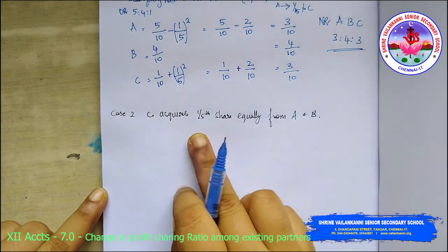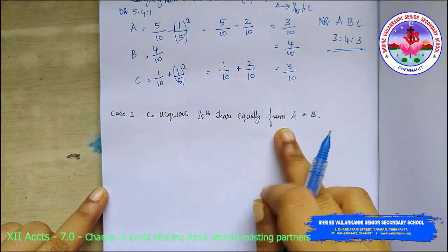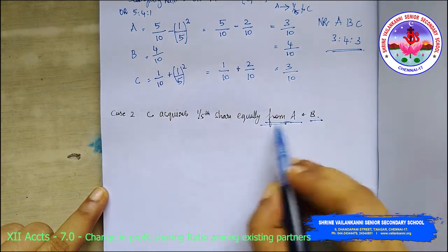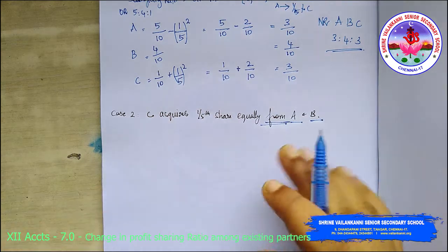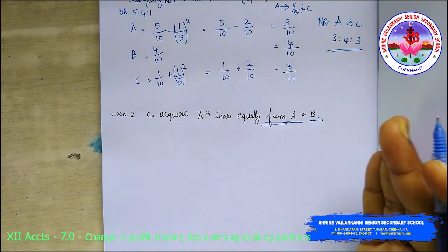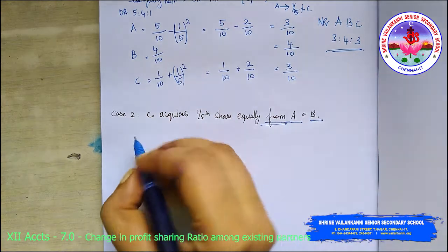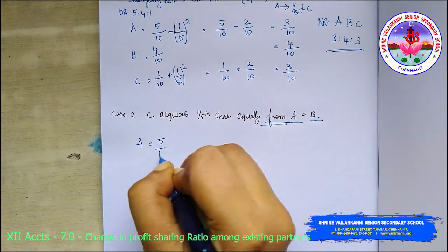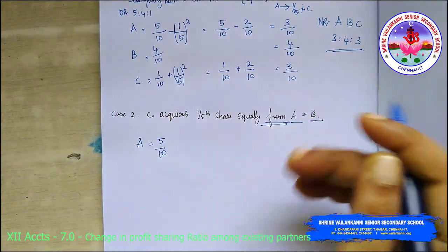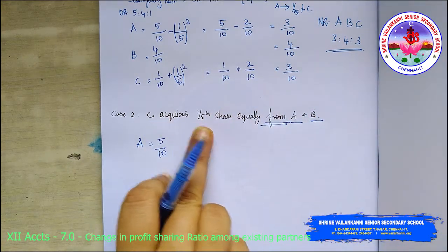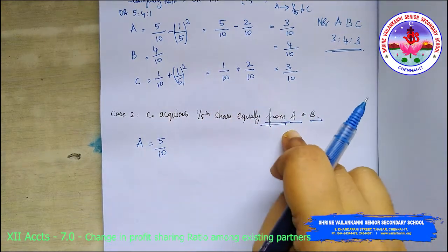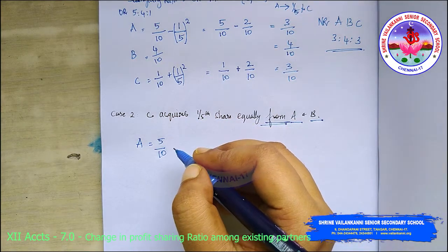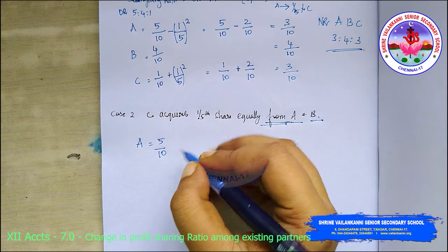For Case 2: C acquires 1/5 share equally from A and B. When the word 'from' is used, you need to deduct. So C gets 1/10 from A and 1/10 from B, meaning we deduct 1/10 from each.